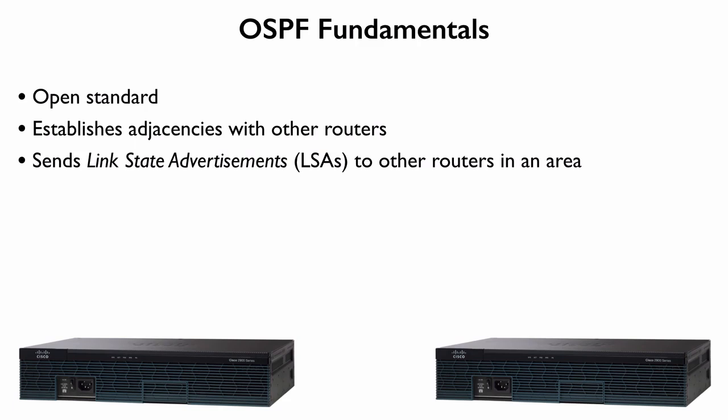Our OSPF speaking routers can send LSAs — link state advertisements — to other routers in their area. All of the routers participating in an area should have an identical view of that area's topology. We have several different types of LSAs; some allow us to advertise networks in one area into another area. Information about an OSPF area comes in the form of link state updates.